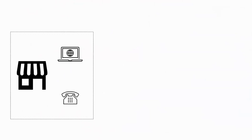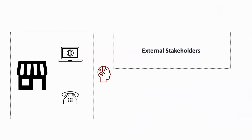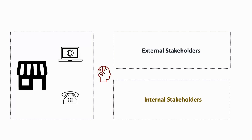Consider your business today: people engage through your physical presence, your website, or your phone. Now imagine you add an AI agent to interface with them. Your external stakeholders — clients, the community you operate in, customers — could call, interact through the web, or visit your stores. Imagine having a set of collective intelligence able to communicate with your external stakeholders in a more efficient and effective way.